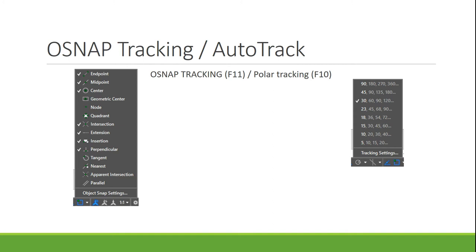OSNAP tracking works by tracking off of whatever endpoints you have. If I want to create something two inches away from an endpoint, I can use OSNAP tracking — click an endpoint, drag off it, and you'll see green dashed lines appear showing the tracking. Polar tracking lets you use angles, so if something is created at 45 or 30 degrees, it helps you get there quickly. OSNAP tracking is controlled by function key 11, and polar tracking by function key 10.